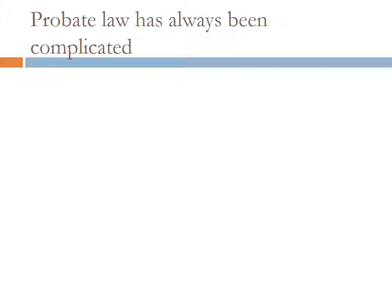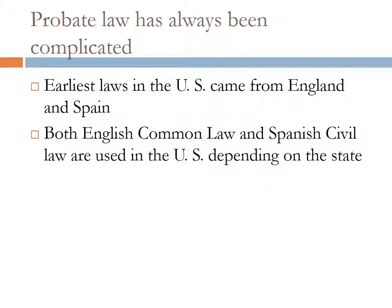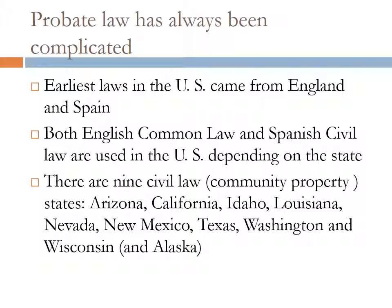If it's any comfort, probate law has always been complicated. The earliest laws in the United States came from England and Spain. Both English common law and Spanish civil law are used in the United States depending on the state. Presently there are nine civil law or community property states — those that derive some of their law concerning marriage and property ownership from Spanish civil law rather than English common law. The laws in these nine states are considerably different and affect the probate laws also. Arizona, California, Idaho, Louisiana, Nevada, New Mexico, Texas, Washington, and Wisconsin are usually considered to be the community property states. Alaska is sometimes included because they also recognize community property.